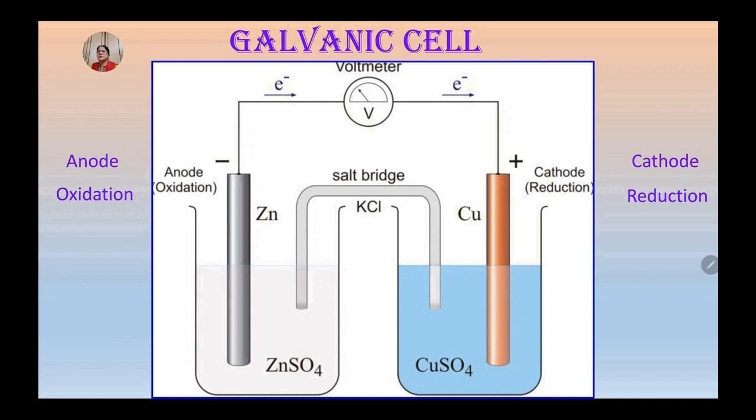Each galvanic cell is made up of two half cells. Let's study these half cells in detail now.